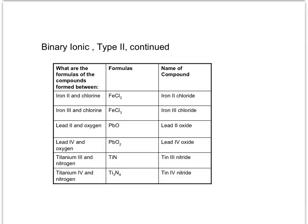Here is a typical test question: what is the formula of the compound formed between iron(II) and chlorine? Using the criss-cross relationship, there will be 2 chlorides for every 1 iron. Then name the compound — remember it could be iron(II) or iron(III), so you must include Roman numerals for transition or post-transition metals.